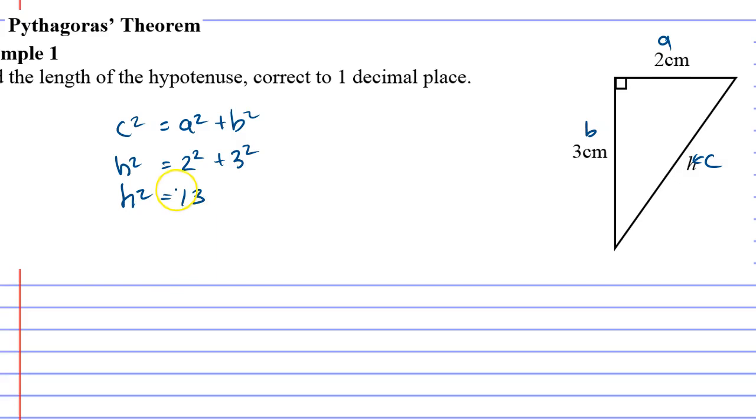Now, it's really important that you know that we're not trying to find what H squared is. We're trying to find what H is. And the way to do that is to square root your 13.